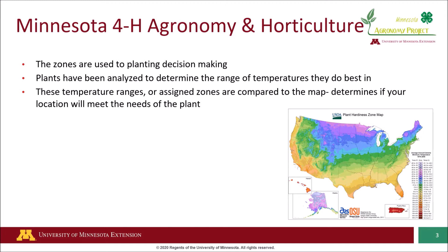So if we live right here in Minneapolis, which is where the University of Minnesota is based out of, we can look at the map and say we're zone 4. So we can handle and grow plants successfully that can handle negative 30 degrees Fahrenheit as a minimum extreme temperature. Let's take a look at some examples and how we can use this map.